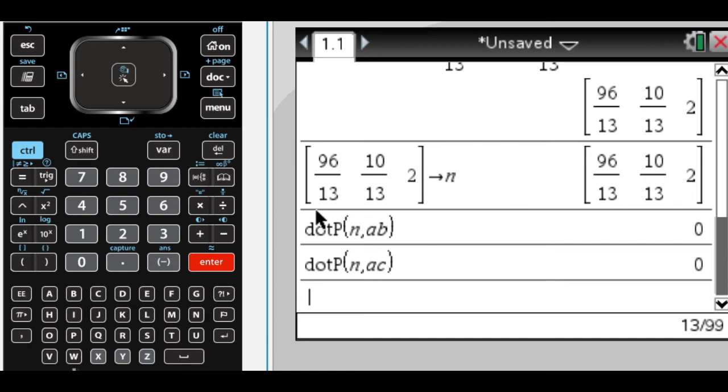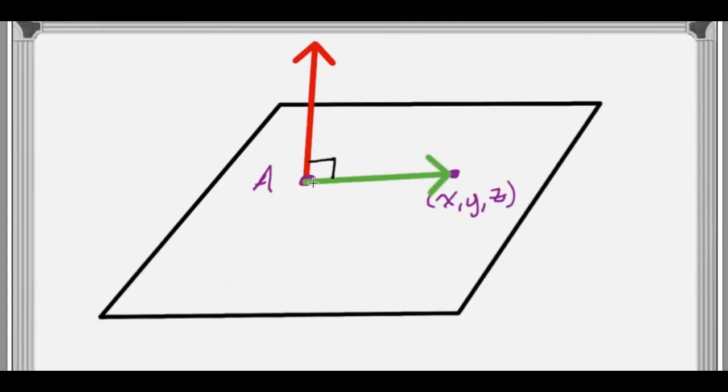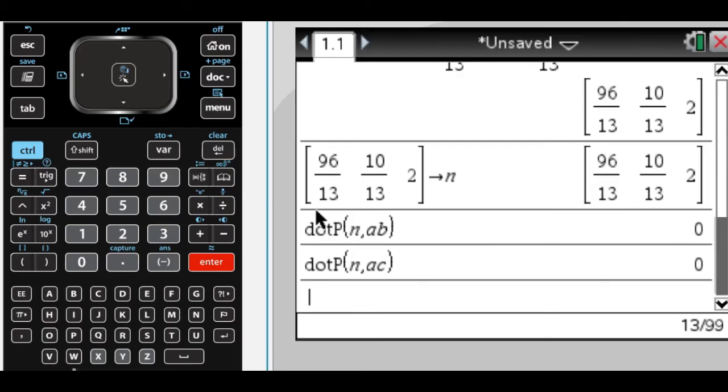Going back to the picture that we had, the next thing that we want to do is create a generic vector that's in the plane. We're going to use the point (x, y, z) as our point in the plane, and then I'm going to use the point A as the initial point. You can use any of the three points.